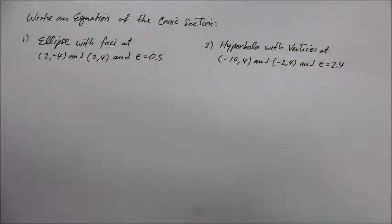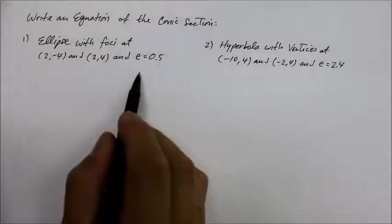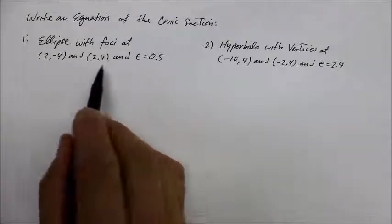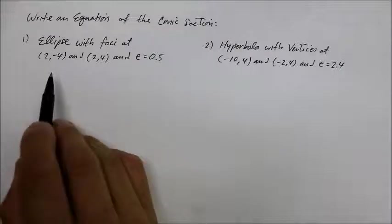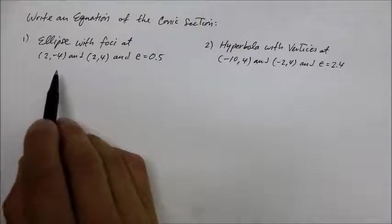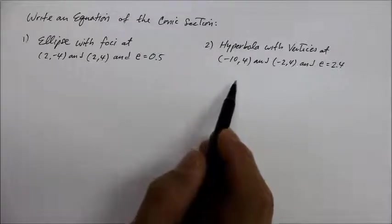To find the eccentricity of a conic section, you should be able to write the equation of the conic section given the eccentricity with any of the elements — either a focus or the vertices. Let me demonstrate number one, the easier one, and you could try the more spicier one, number two.